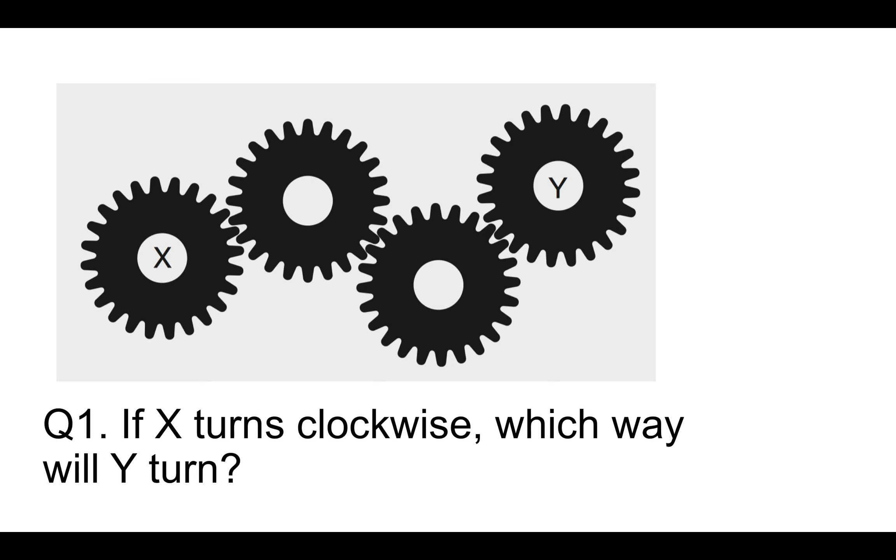So let's go back to the question. Number one. If X turns clockwise, which way will Y turn? So X, that's turning that way. And alternating cogs like the second one will understandably go anti-clockwise. The next one will go clockwise, so therefore Y will go anti-clockwise. Really easy to answer once you understand clockwise and anti-clockwise.